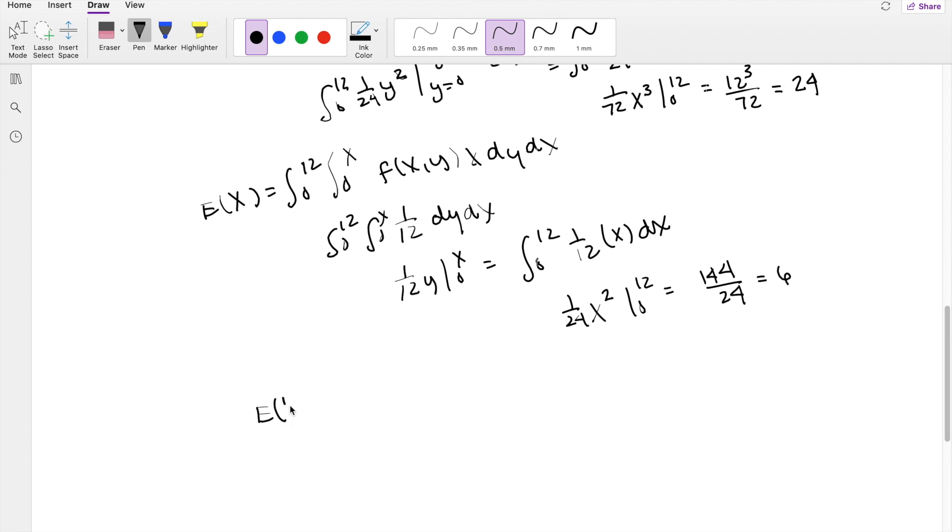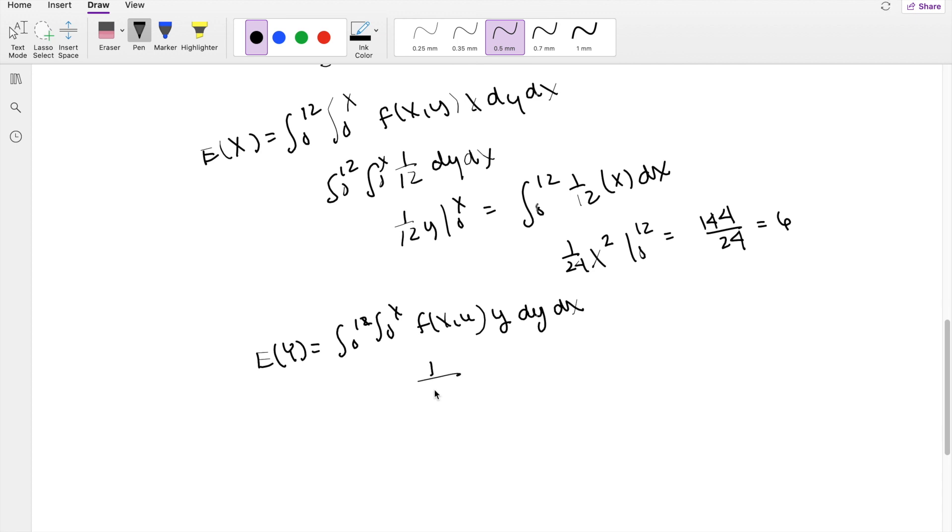And finally, the expectation of Y. This still has the same range, 0 to 12, 0 to x, but then instead of multiplying by the other value, we multiply by y dy dx. So then, unfortunately, nothing cancels out, so you just get 1 over 12x times y on the numerator, dy dx, integrating with respect to y first. So when you integrate with respect to y, the 1 over 12x is just a constant, so you just get y squared over 2, integrating this from 0 to x for y.